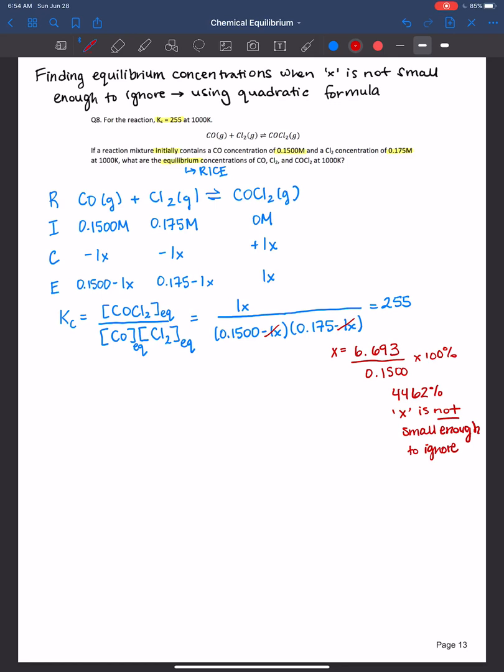And let's go ahead and rewrite the equation again. So I'm going to just say x over 0.150 minus x times 0.175 minus x is equal to 255. I need to do FOIL at the bottom here, multiply this out. So that is always the first multiply together, outside, inside, last.